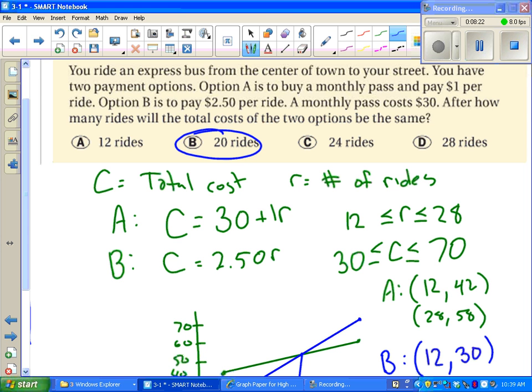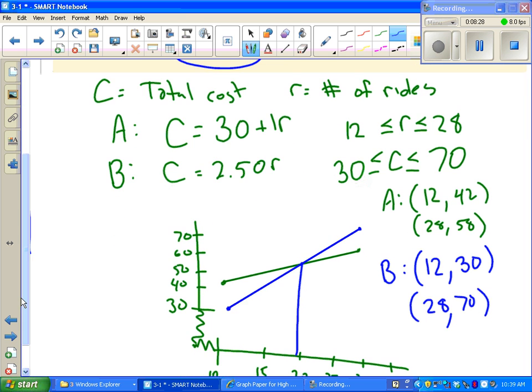So after 20 rides, my cost is the same. Which really means, looking at the graphs, if I'm going to take less than 20 rides, the blue line looks like the best choice. Option B.